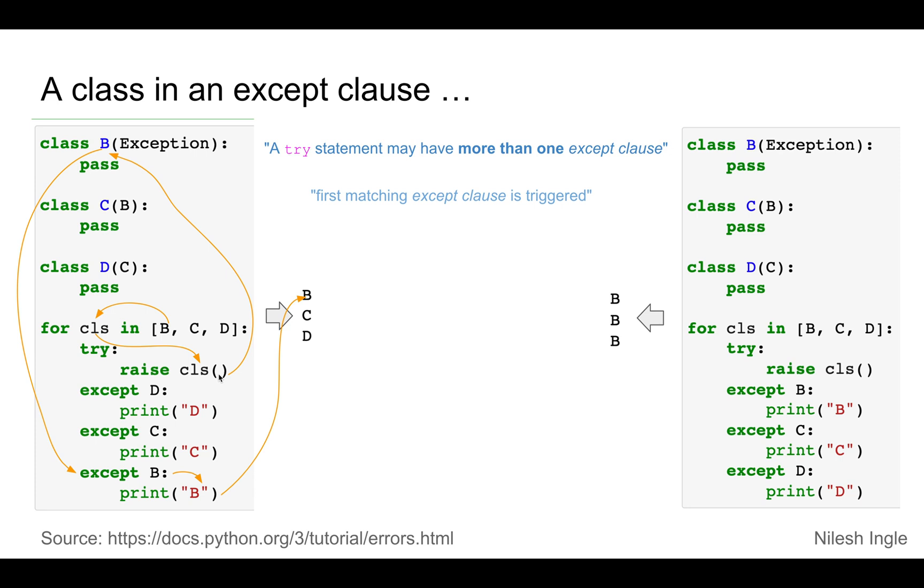Not display B but raise an error that B has happened. So when we exit out of the try block, we go into the next. Again, that name does not match with the error that is raised, which is B, and so it goes on to the next one.